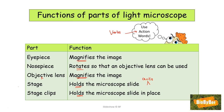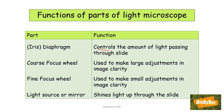The function of the iris diaphragm is that it controls the amount of light passing through the slide — link that in with the iris of the eye. The coarse focus wheel is used to make large adjustments to the image to reduce blurriness. The fine focus wheel is used to make small adjustments for sharper image clarity. The light source or mirror shines light up through the slide.